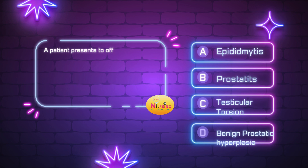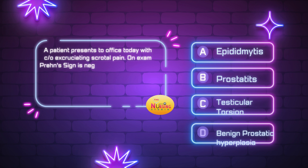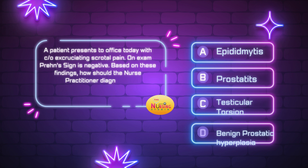Question number one states: a patient presents to the office today with complaints of excruciating scrotal pain. On exam, Prehn's sign is negative. Based on these findings, how should the nurse practitioner diagnose? Is it A, epididymitis; B, prostatitis; C, testicular torsion; or D, benign prostatic hyperplasia? Take a moment and tell me what you got in the comments.